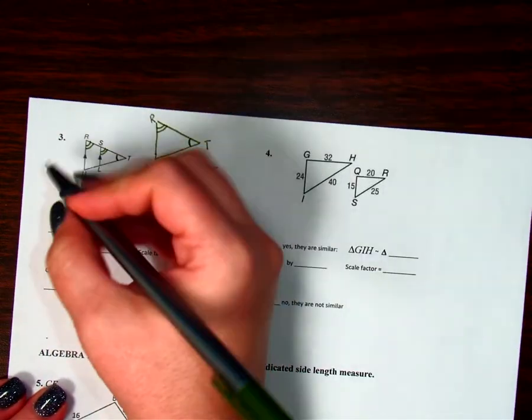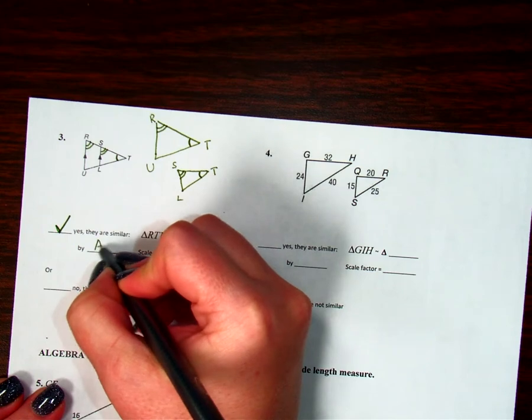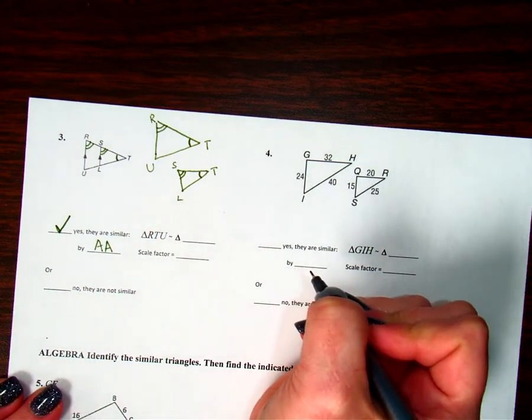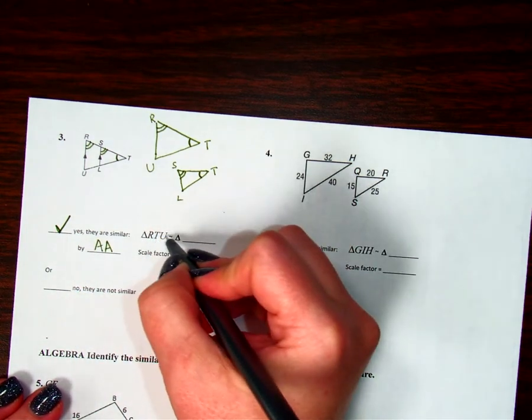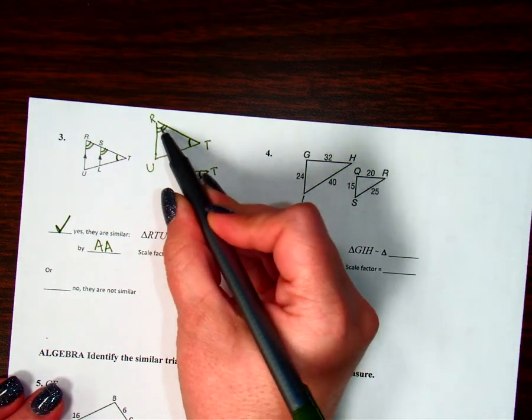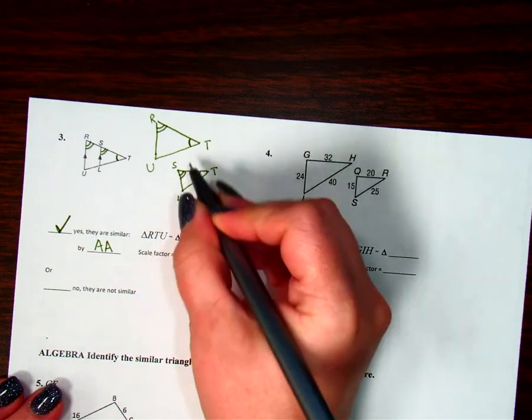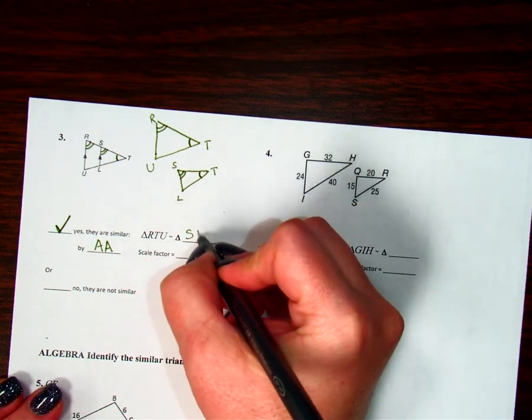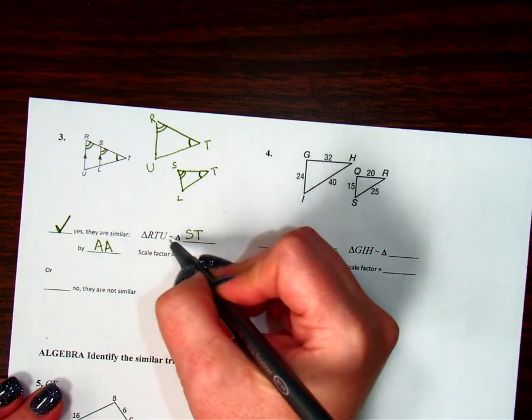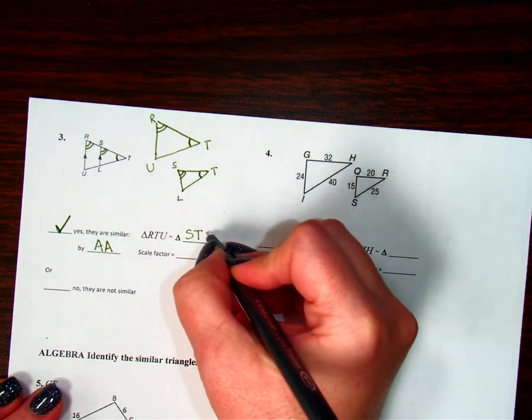So are my triangles similar? Yes, because I can show two angles are similar. So by the angle angle similarity, RTU is similar to triangle. So if I started here at R, my double angle, I'm going to start at S. And then I went to T, my single angle, T. And then I went to U. So here I'll go to L. STL.